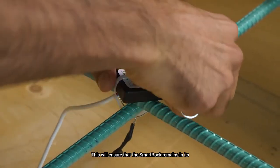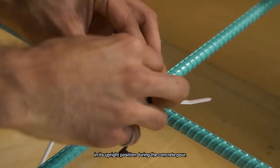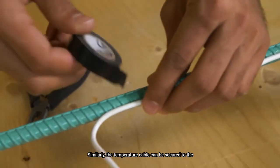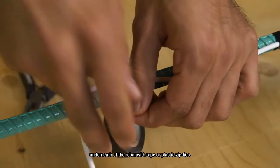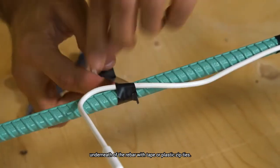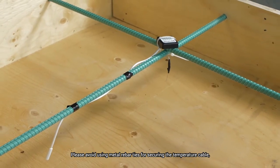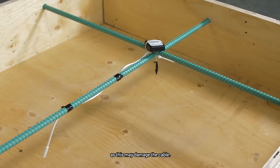Similarly, the temperature cable can be secured to the underneath of the rebar with tape or plastic zip ties. Please avoid using metal rebar ties for securing the temperature cable, as this may damage the cable.